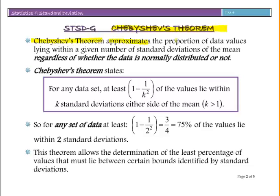Chebyshev's Theorem approximates the proportion of data values lying within a given number of standard deviations of the mean, regardless of whether the data is normally distributed or not.